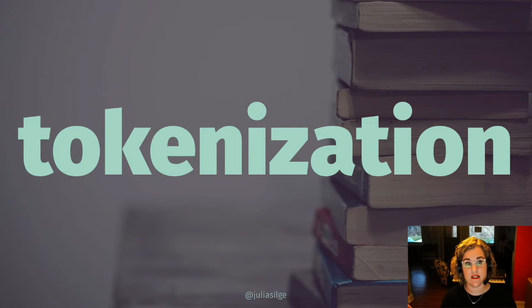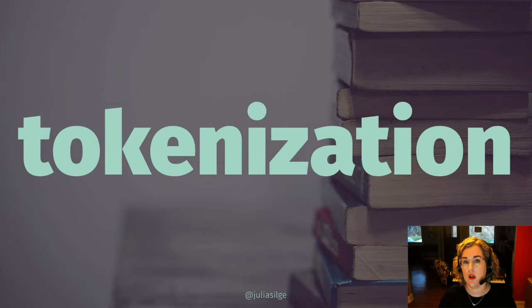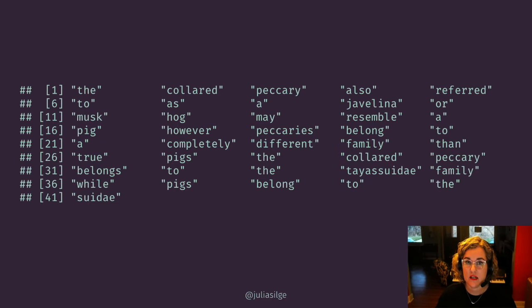Typically, one of the first steps in transformation from natural language to features is tokenization. In tokenization, we take an input — some string, some piece of text — and we break it apart into some meaningful unit of text like a word. Here is the result of tokenization to single words for an example piece of text describing an animal.